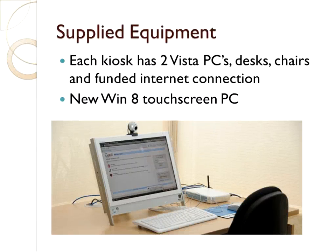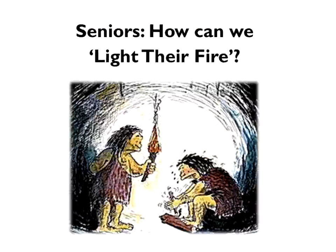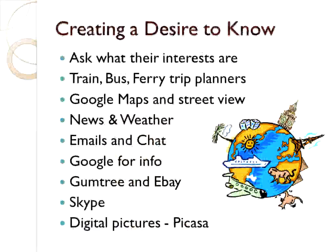The question is: with a senior, how can we light their fire? We can see what their needs are, we have the equipment — but how do we light their fire? The first thing is to create a desire to know. And creating a desire to know with seniors — the easiest way is to ask what their interests are. Is it gardening? Is it travel? Is it just finding information? If you can find out their interests and tap into those interests, you're on your way.